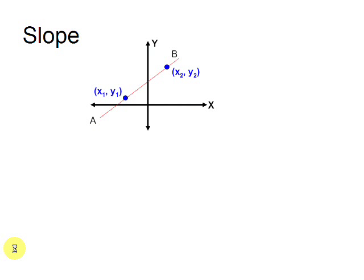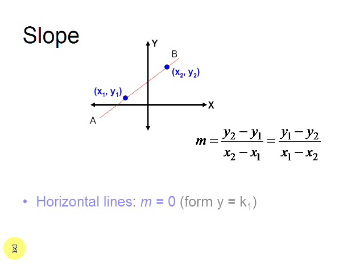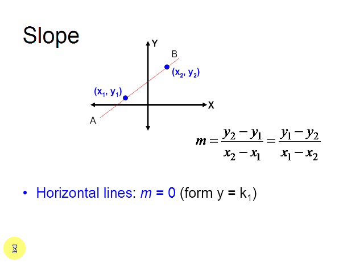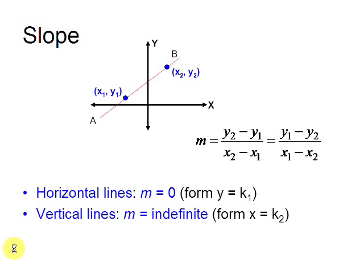The slope is the difference of the vertical distance of two given points divided by their horizontal difference. For horizontal lines, the slope is always 0. For vertical lines, the slope is indefinite.